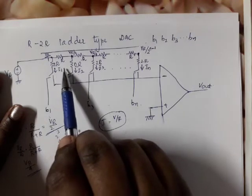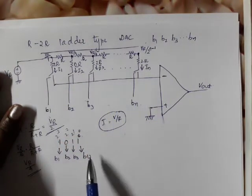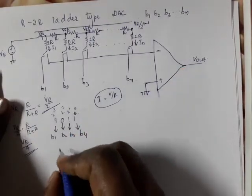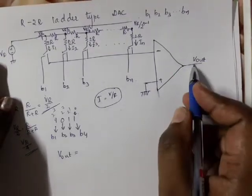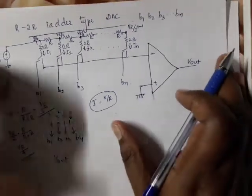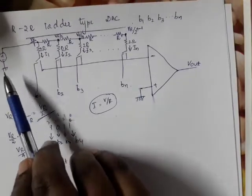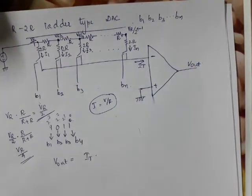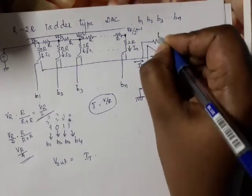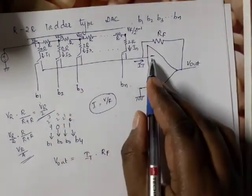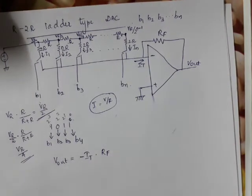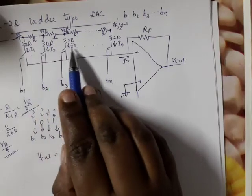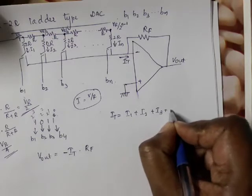The last bit corresponds to 2 power 0, giving a small current. V out is equal to the total current IT multiplied by the feedback resistor Rf, with a negative sign because the input is at the inverting terminal. The total current IT equals I1 plus I2 plus I3 plus ... plus In.